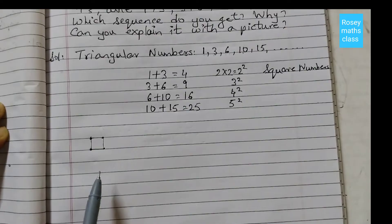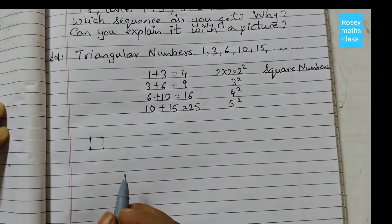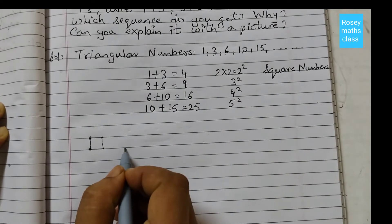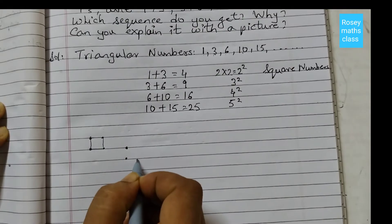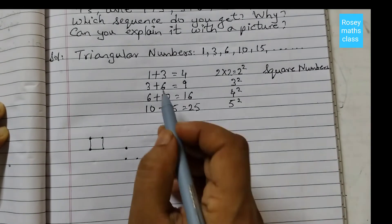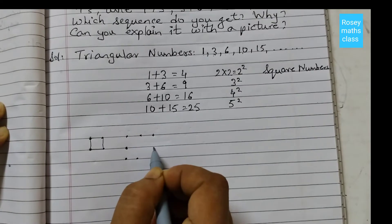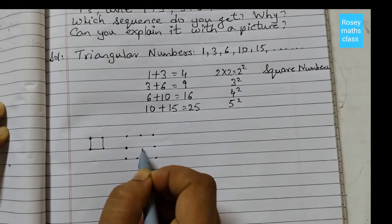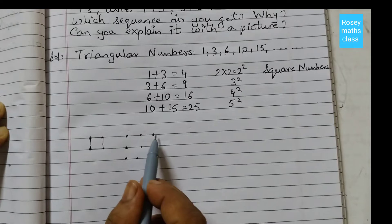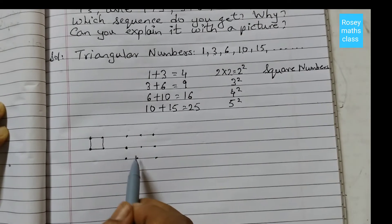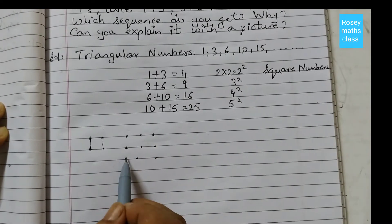Similarly, 3+6. So first draw 3 dots: 1, 2, 3, and then 6 dots. So 1, 2, 3, 4, 5, 6. See, again we got a square. So when we are adding two triangles, this is one triangle and this is another triangle, we are getting a square.